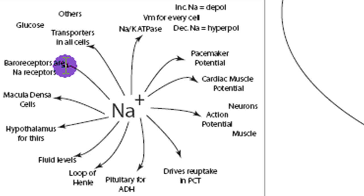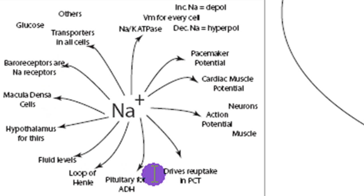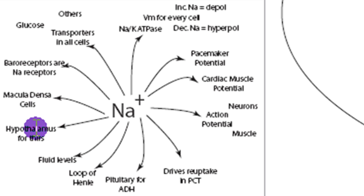Baroreceptors, generally in the aorta or in the carotid, are used to sense blood pressure, and those are essentially sodium receptors. Macula densa cells, the hypothalamus, fluid levels, and the pituitary are all things that help regulate sodium balance. Macula densa cells are in the kidney, specifically in the nephron. The hypothalamus regulates thirst. The pituitary senses sodium concentrations to regulate osmolarity — the concentration of your plasma — and how much sodium you have, and that's going to release ADH, which causes an increase in water uptake.